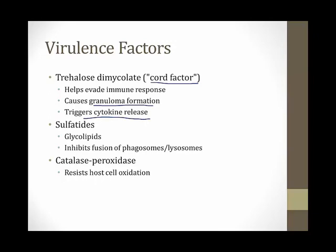Another important virulence factor is sulfatides — glycolipids on the surface of mycobacteria. For phagocytes to kill mycobacteria, they need to fuse the phagosome and lysosome inside the cell. But sulfatides inhibit that process, allowing mycobacteria to survive inside cells. Finally, many mycobacteria have the enzyme catalase peroxidase, which allows them to resist killing by host cell oxidative processes.